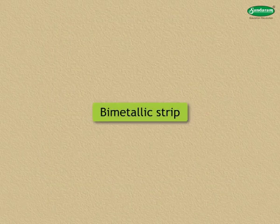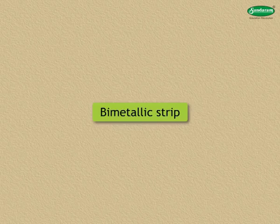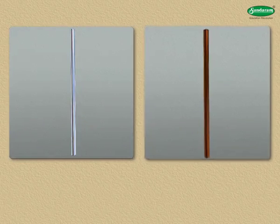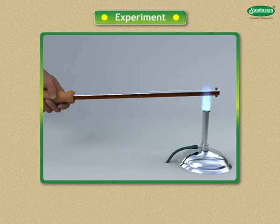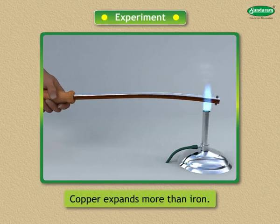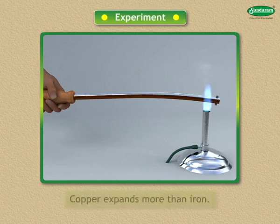Let us gain information on the bi-metallic strip and where it is used. Take an iron and a copper strip of the same size, rivet them firmly together. Now heat the strip. The strip bends with the iron strip on the inside. This is because copper expands more than iron. In the bi-metallic strip we make use of the unequal expansion.